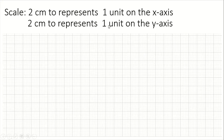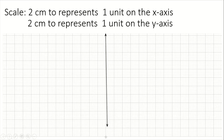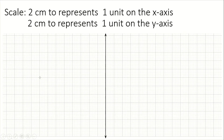Draw a vertical line to represent your y-axis — your line should be drawn with a ruler so it is straight. Then draw a horizontal line that intersects this vertical line at 90 degrees to represent your x-axis, like this.